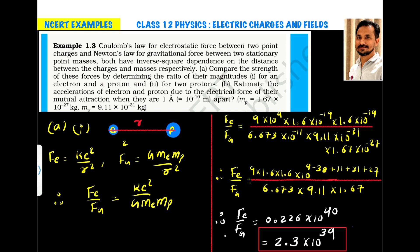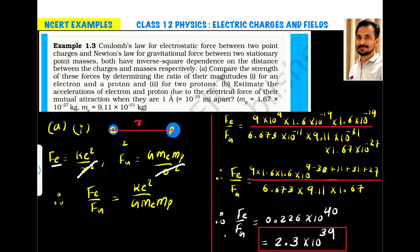Similarly, the gravitational force between the electron and proton is given by GM_eM_p/R². Since the distance R is the same in both expressions, taking the ratio causes R² to cancel. So the ratio Fe/Fg = Ke²/GM_eM_p.